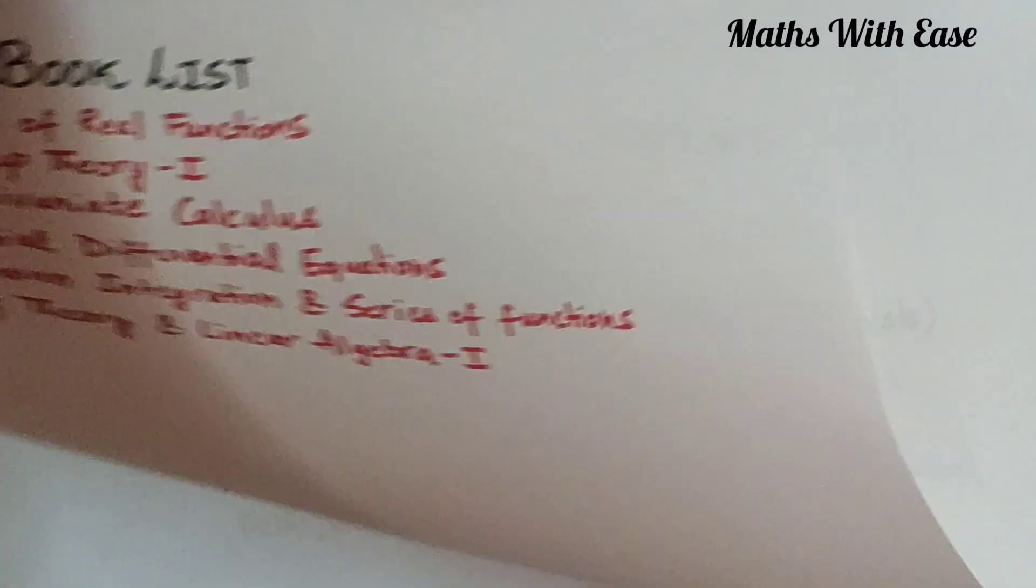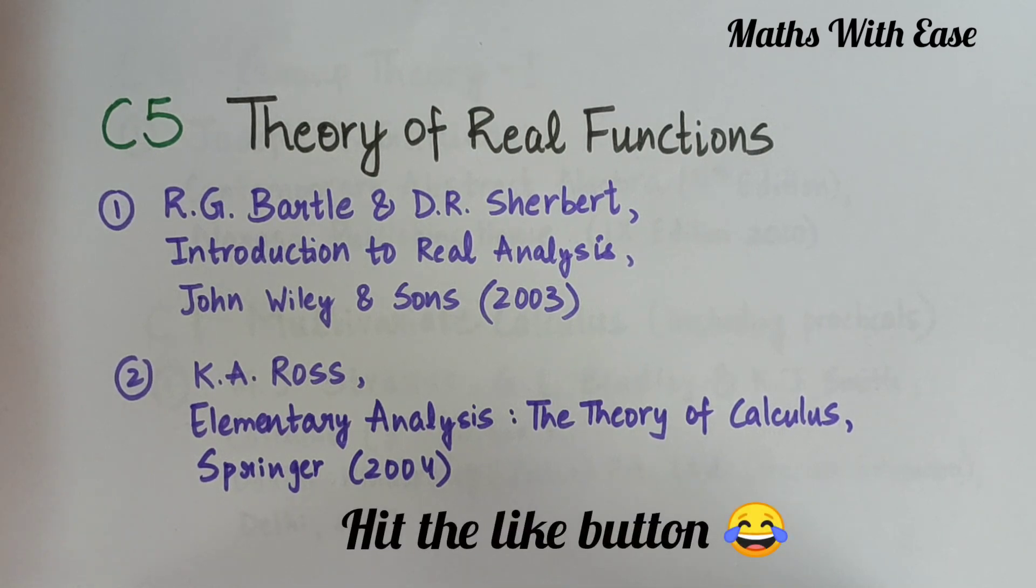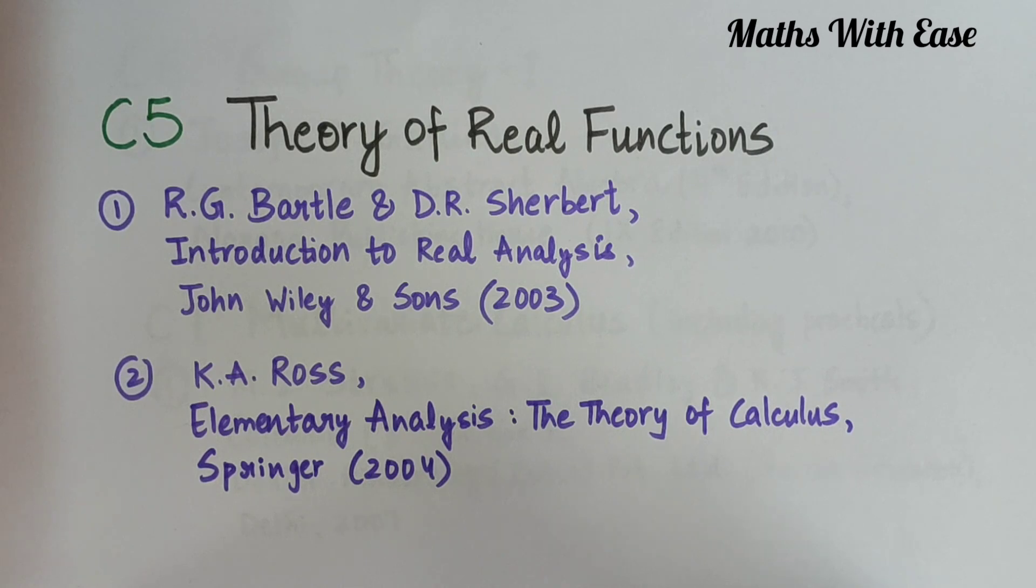Let's start. For the very first subject, core subject C5 Theory of Real Functions, we have 2 books. First is R.G. Bartle and D.R. Sherbert, Introduction to Real Analysis. The second book is K.A. Ross, Elementary Analysis, The Theory of Calculus. The very first book is a very famous one for Real Analysis.